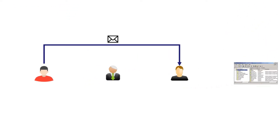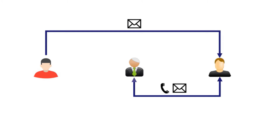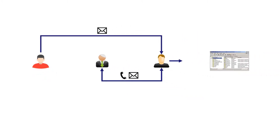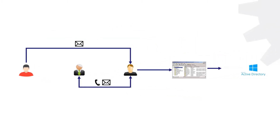IT then has to verify the request with the manager. If the request is approved, then IT makes the necessary modifications to the end user's access in the Active Directory — for example, making them a member of an application group.